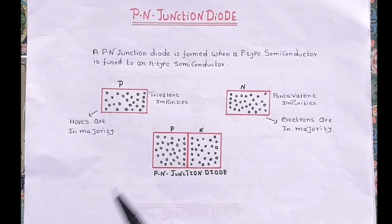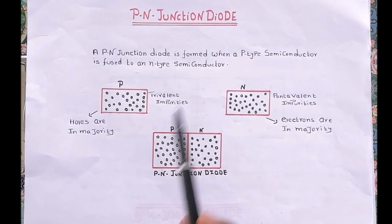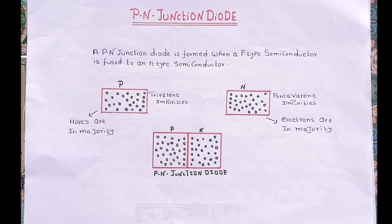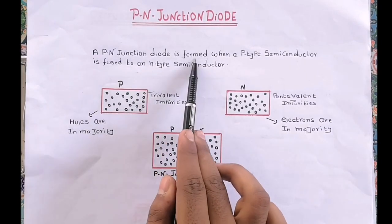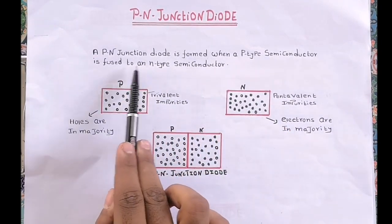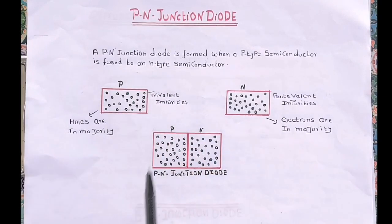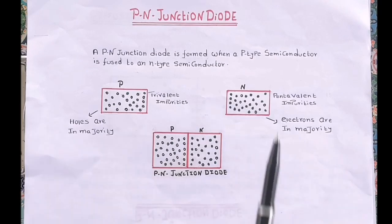Hello friends, welcome to my channel. You are watching Electronic Stuff. Today in this video we are going to understand about p-n junction diode. A p-n junction diode is formed when a p-type semiconductor is fused to an n-type semiconductor. As you can see here, this is the p-type semiconductor and this is the n-type semiconductor.